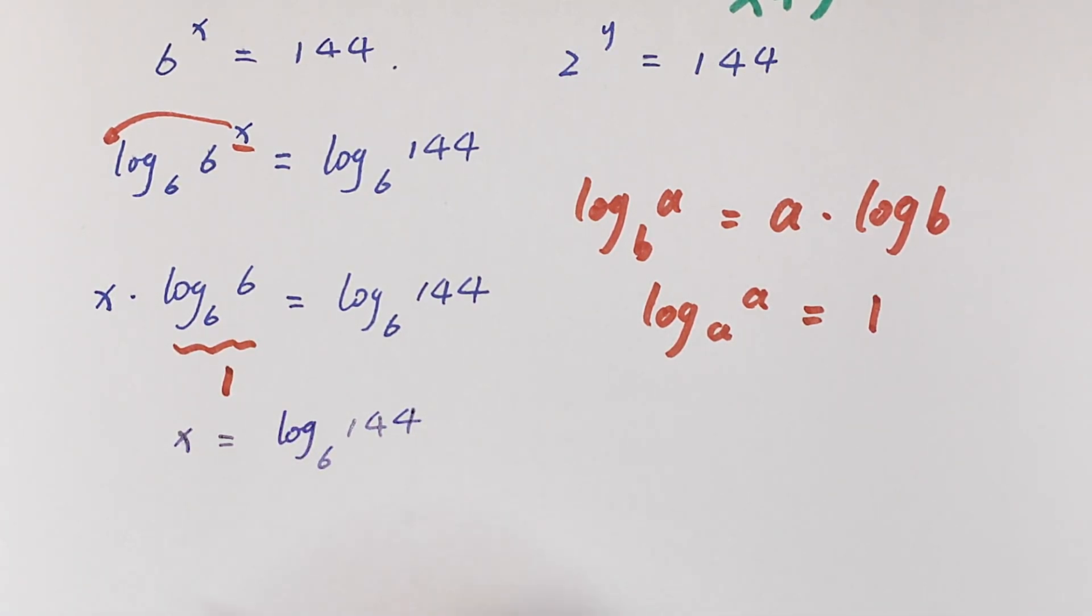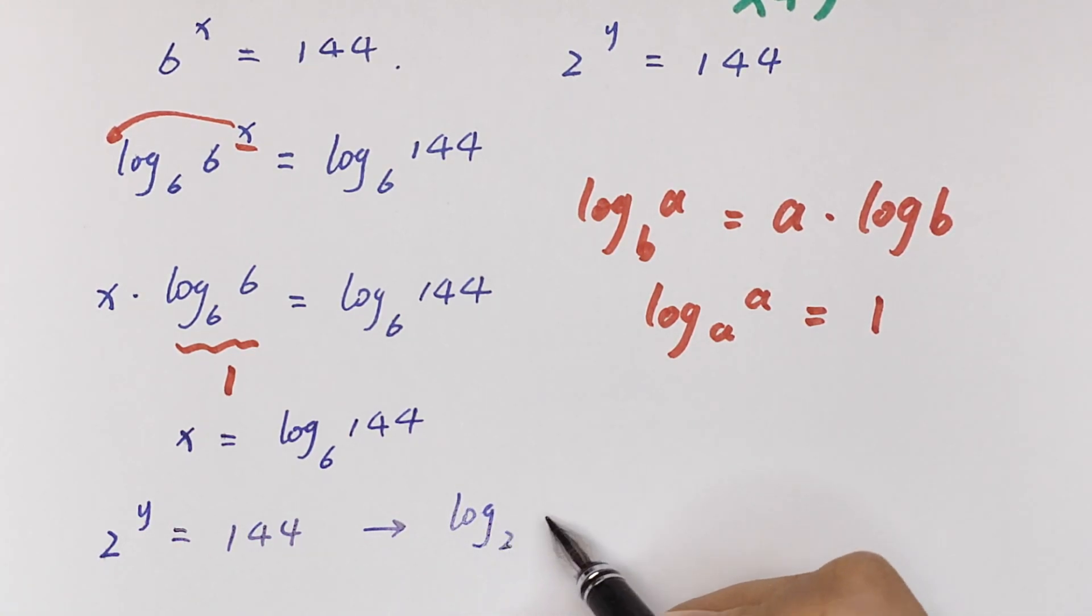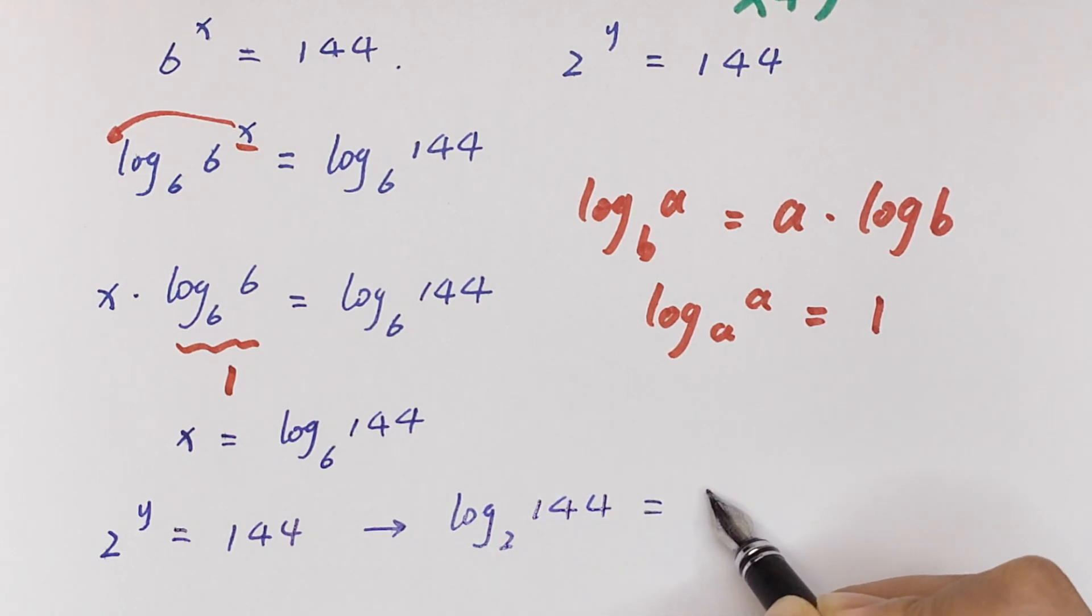Then likewise, 2 to the power y is equal to 144. It means log base 2 of 144 is equal to y.